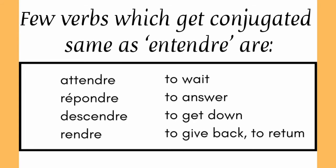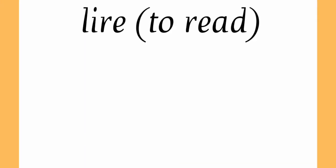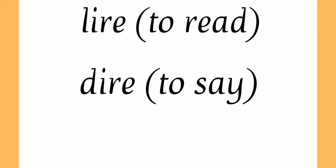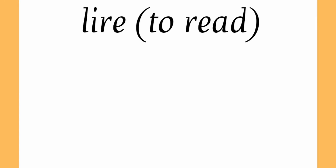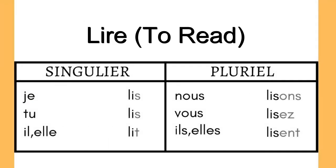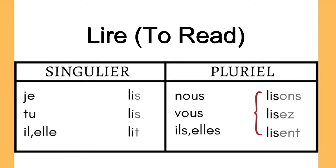Let's see more -re ending verbs which do not follow the exact same rule of the third group. We will start with 'lire'. Lire means 'to read', and there is another verb 'dire', which means 'to say'. Lire and dire follow the same conjugation pattern. The conjugation of lire is: je lis, tu lis, il lit, elle lit, nous lisons, vous lisez, ils lisent, elles lisent. We have removed -ire and thus 'li' becomes the radical with je, tu, and il/elle. With nous, vous, and ils/elles plural, the radical becomes l-i-s and then we add the endings.